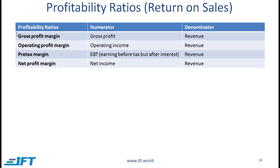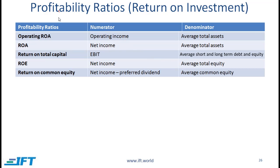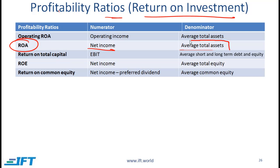The profitability ratios here should seem very familiar — you saw these ratios when we did the income statement. Essentially, higher is better. Gross profit margin is gross profit divided by revenue. Operating profit margin is operating income over revenue. Pre-tax margin is earnings before tax over revenue, and net profit margin is net income over revenue. Return on assets is net income from the income statement divided by average total assets — the income statement number in the numerator and the average balance sheet number in the denominator.